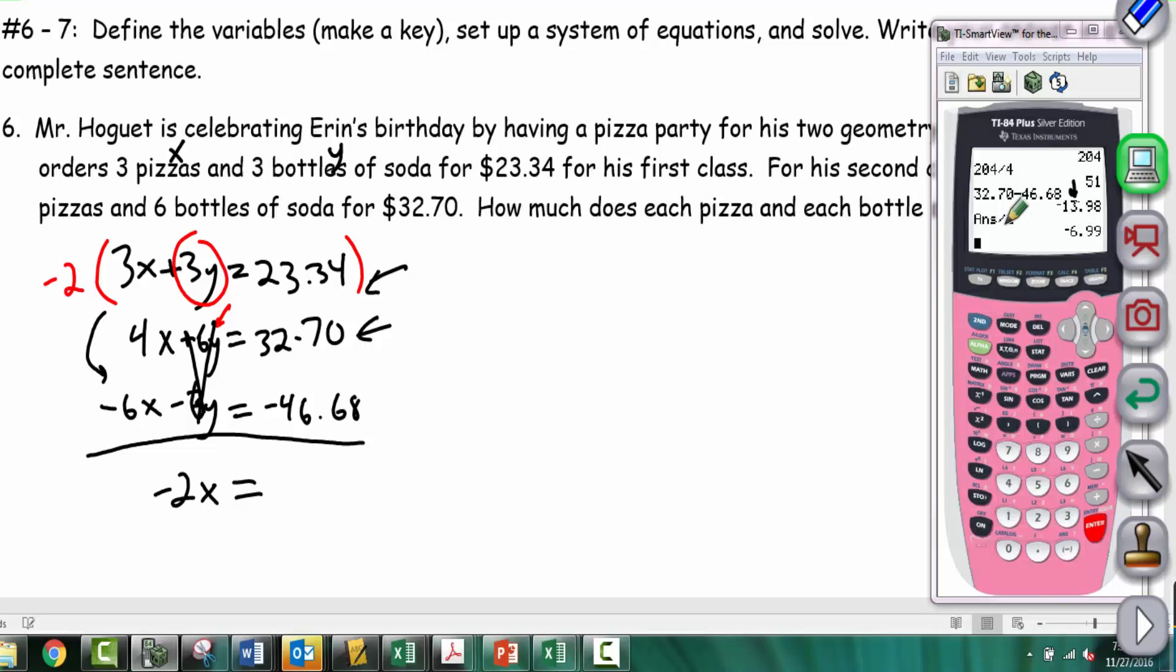So we have 32.70 minus 46.68, which is -13.98. I forgot to divide by negative 2 in the calculator. Dividing -13.98 by -2 gives us x = 6.99, which is a respectable price for a pizza.